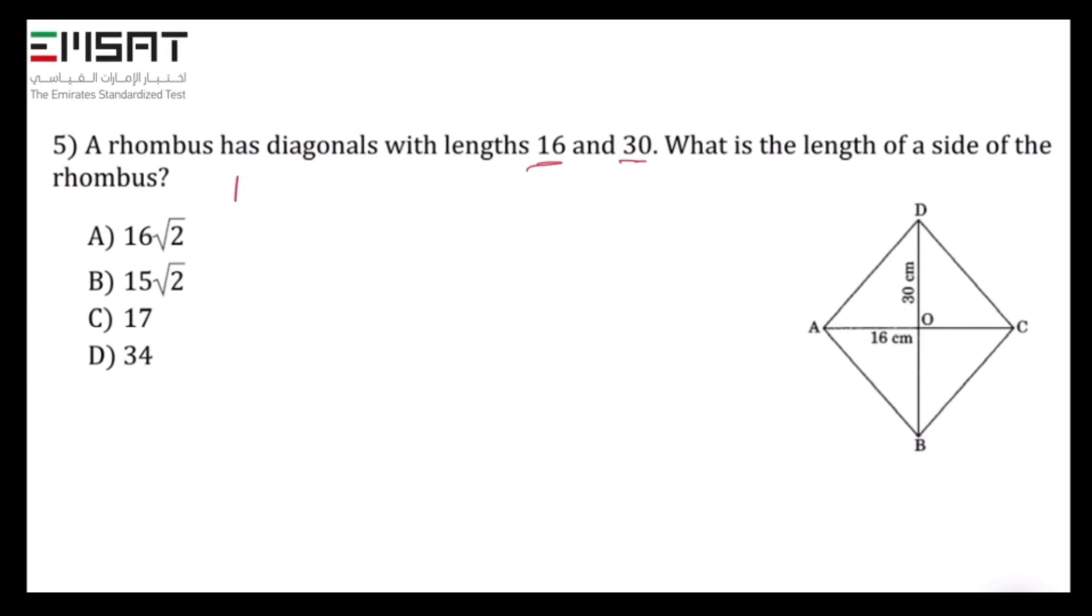So AO can be written as AC over 2, which is 16 over 2, and the answer would be 8 cm. And DO can be written as BD over 2, which is 30 over 2, and the answer is 15 cm.